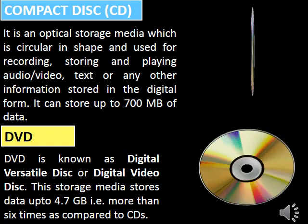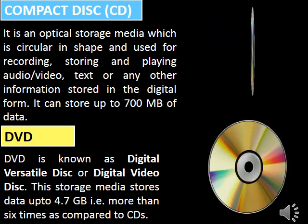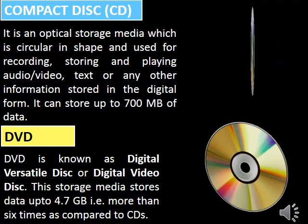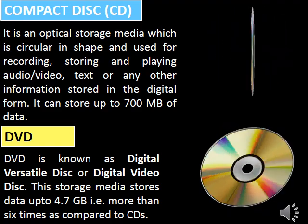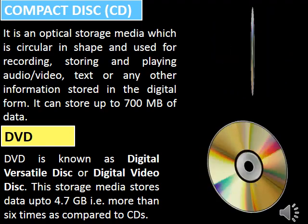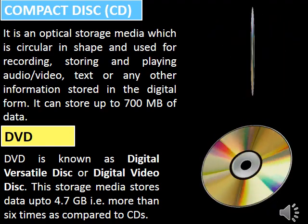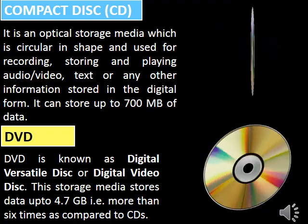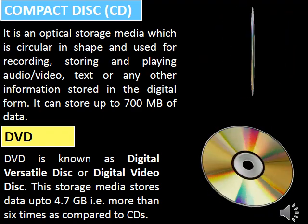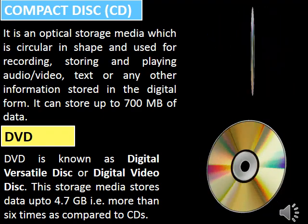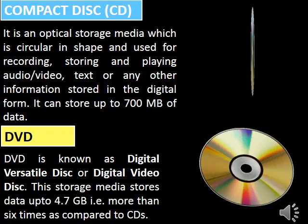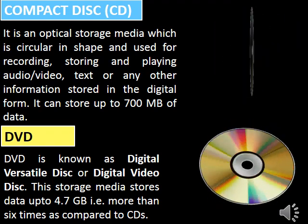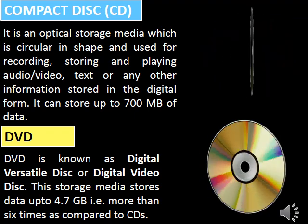The second storage device is the compact disk or CD. It is an optical storage media which is circular in shape and used for recording, storing and playing audio or video, text or any other information stored in digital form. It can store up to 700 MB of data. The third storage device is DVD, known as digital versatile disk or digital video disk. This storage media stores data up to 4.7 GB — more than six times compared to a CD.